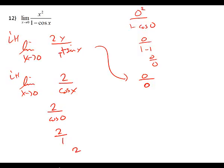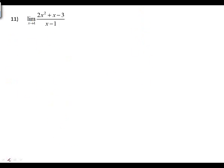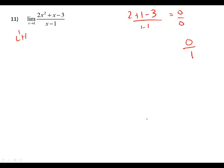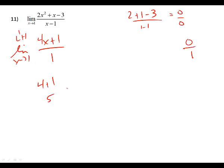Let me do another L'Hôpital we haven't done yet. If I put one in, I would get 2 plus 1 minus 3, which is zero, and then 1 minus 1, which is zero. So I have to use L'Hôpital. If you put the limit and it's zero over one, the answer is zero — you use direct substitution, you don't have to do L'Hôpital. What's the derivative of the top? 4x plus 1 over the derivative of the bottom, which is 1. I put in a 1: I get 4 plus 1, which is five.